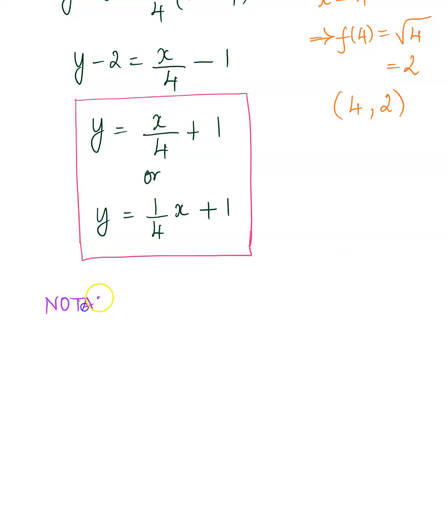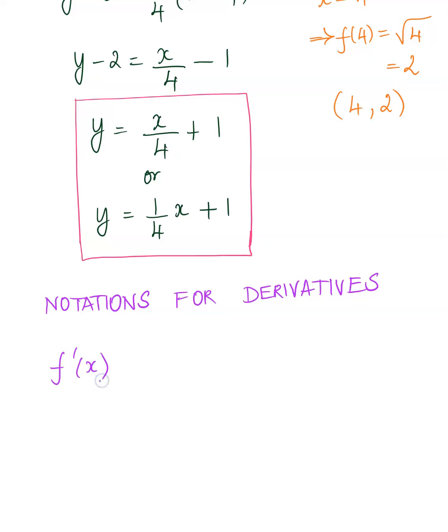Here are some notations for derivatives. The derivative concept was discovered both by Isaac Newton and by Leibniz. They both discovered it at about the same time through their own approaches, and therefore they used certain notations that were different from each other. When it came to light that they both were working on it, it was challenging for people to choose one notation over the other. Depending on what approach they used, they used these notations interchangeably.